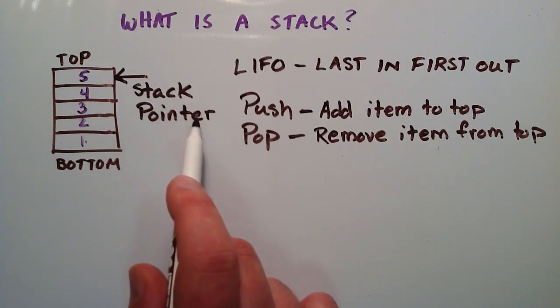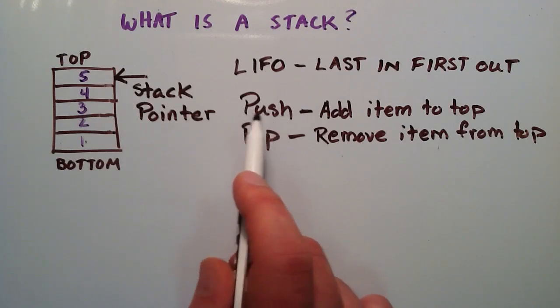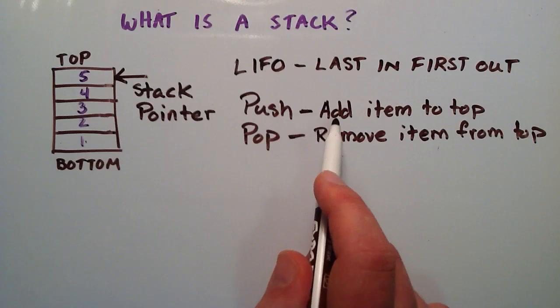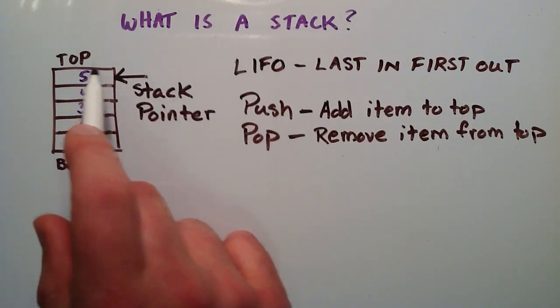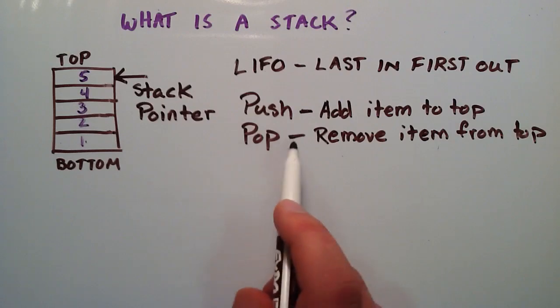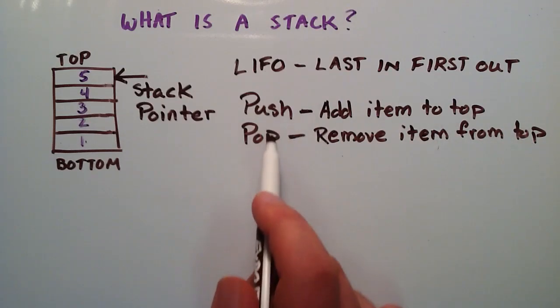Basically what we have with a stack is we have two main functions to manipulate it. We have the push function which adds an item or some data to the top of the stack. Or we have the pop function which removes the item from the top. So, these are the two functions that we use to manipulate our stack.